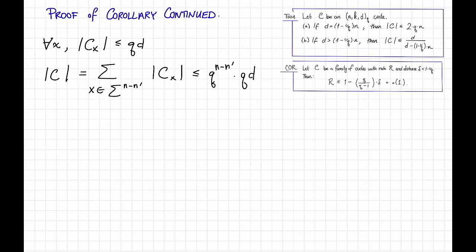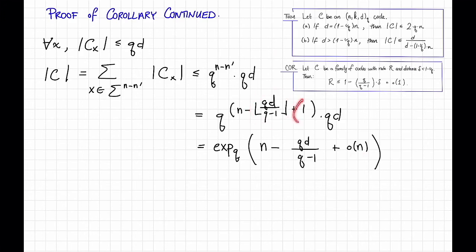And plugging in the definition of n prime, this is q to the n minus the floor of qd divided by q minus 1 plus 1 times qd. I'm going to write this as exp sub q, that just means q to the stuff, so q to the n minus qd divided by q minus 1 plus a little o of n term. Here, this little o of n term is capturing the floor on that and the plus 1 and stuff like that. Pulling out an n, this is equal to exp sub q, again, that just means q to the stuff, of n times 1 minus q over q minus 1 times delta, the relative distance. Remember that delta is just d divided by n, that's why it shows up here. Plus a little o of 1 term.